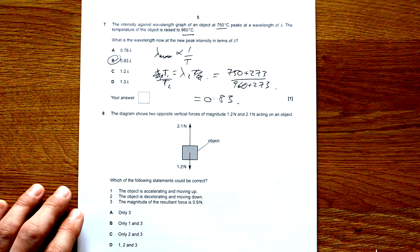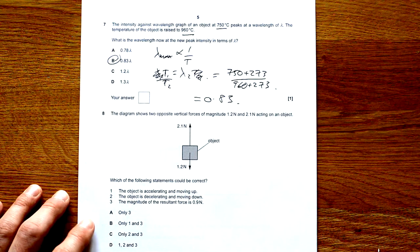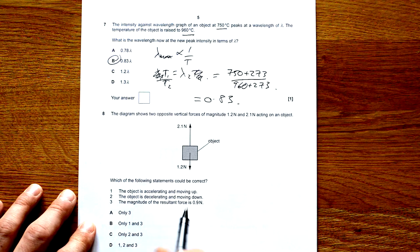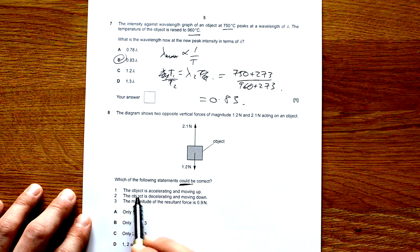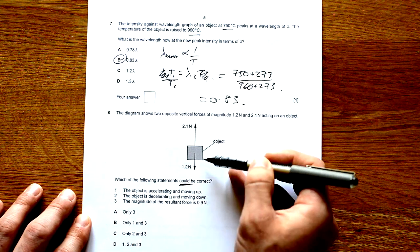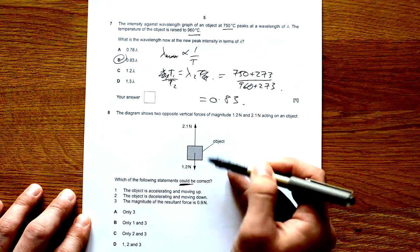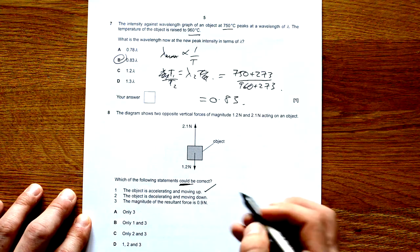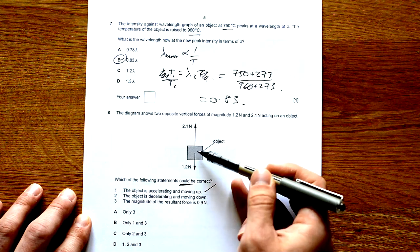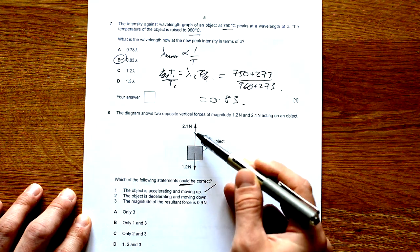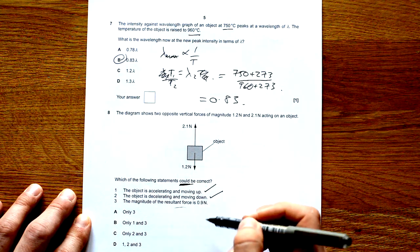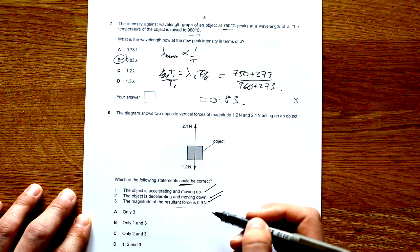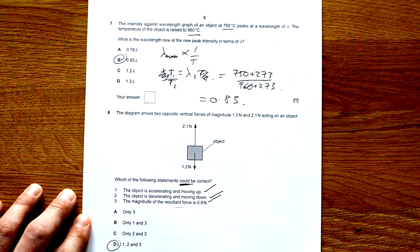The diagram shows two opposite vertical forces of magnitude 1.2 and 2.1 acting on an object. Which statements could be correct? Classic case of me not reading the question the first time. Number one: The object is accelerating and moving up. If it is moving up then yes it's accelerating. Two: The object is decelerating and moving down. Yes, if it's moving downwards but we have the resultant force pointing upwards, it is decelerating. And the magnitude of the resultant force is 0.9, that's also correct. So therefore it's one, two and three.